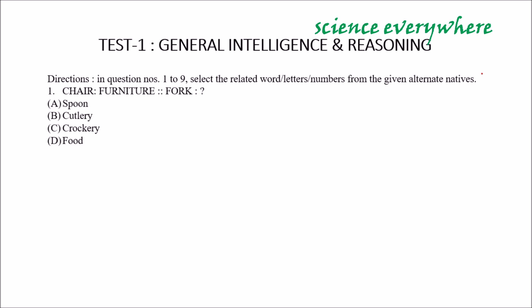The first question is, Chair is to Furniture and Fork - we have to find another related word from these four options A, B, C, and D. Yes, you can relate the chair with furniture. You can assume chair as an individual and furniture as a family or a member. Member of furniture is a chair. Furniture is like a group, class you can assume. In similar way, Fork is an individual and we have to find its class, group, or family among these four options.